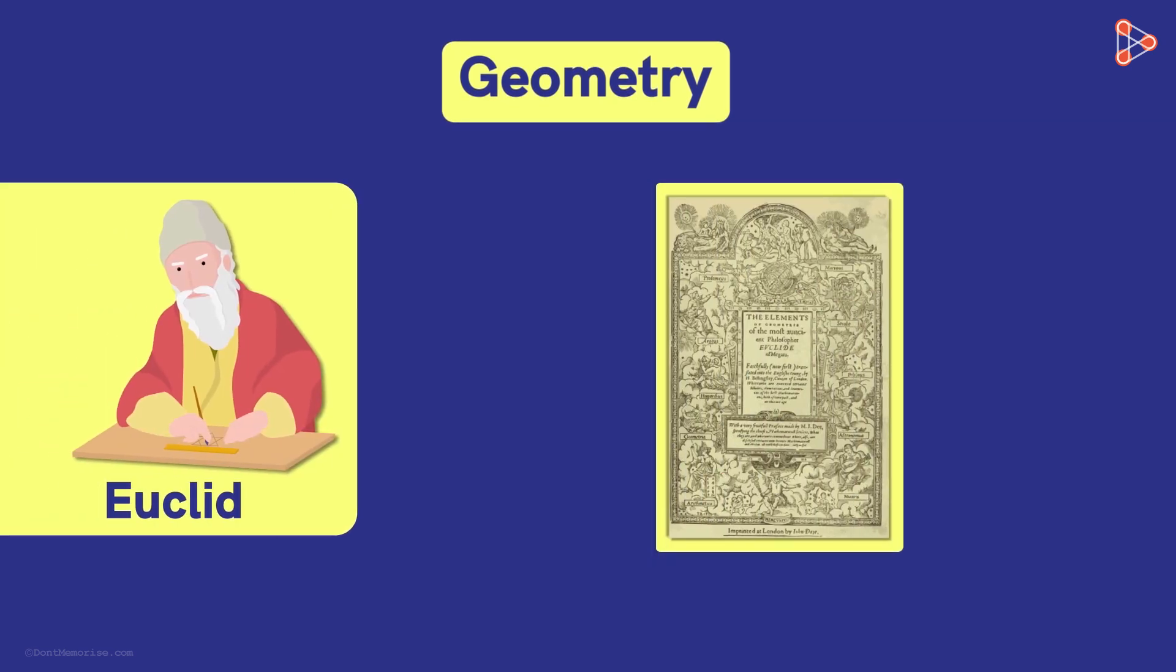So all the existing knowledge about geometry was brought together in a form of books by Euclid. Euclid was a Greek mathematician who used to teach mathematics in the city of Alexandria in Egypt. He was the first person to collect all the work done on geometry and put it together in a book called Elements.